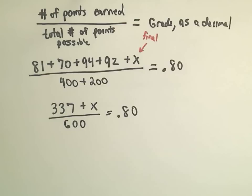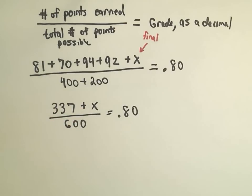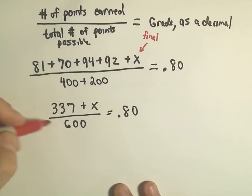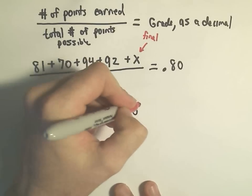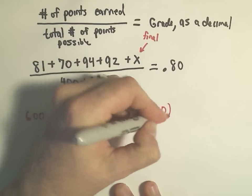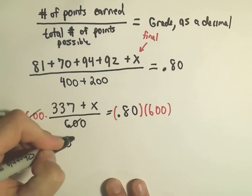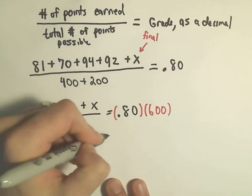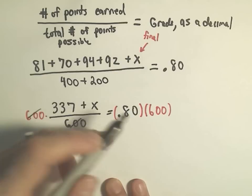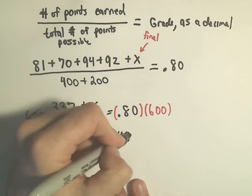So, okay, well, I'm dividing, eventually I want to solve for x. So since I'm dividing by 600, I'm going to multiply both sides by 600. So on the left side, that simply cancels out, and we're left with 337 plus x.